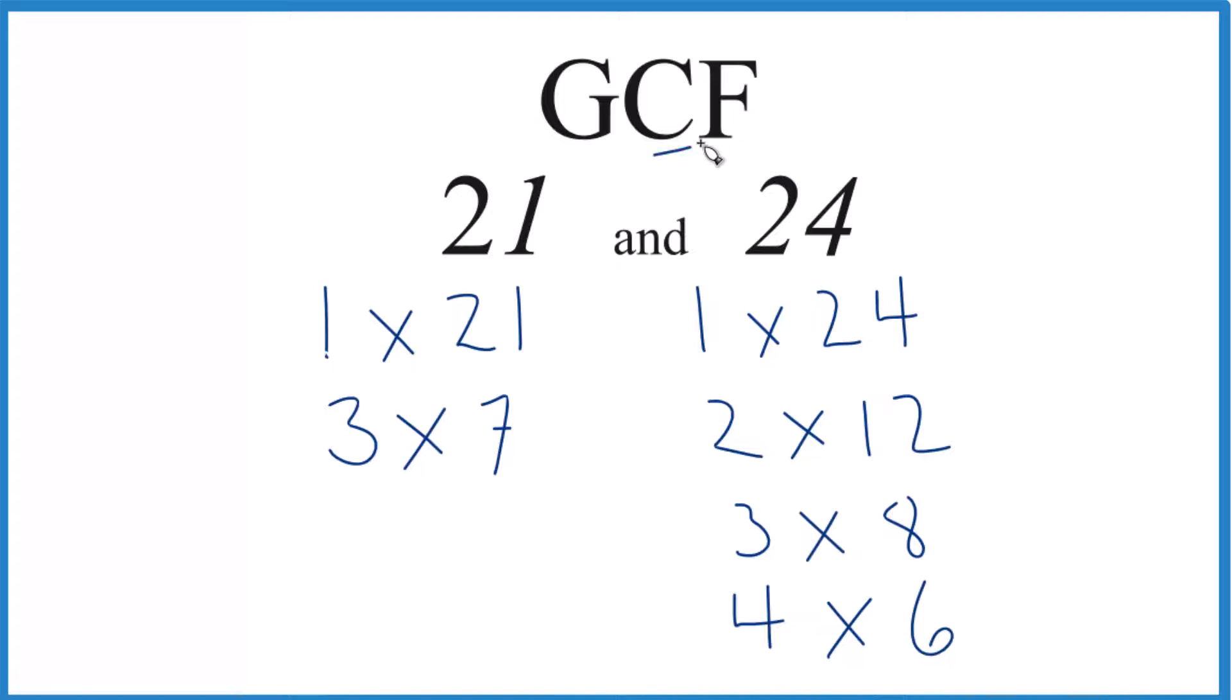We have our factors, let's find what's in common. 1 goes into 21 and 24 evenly, so that's a common factor. And then we have 3. 3 is a common factor between 21 and 24.